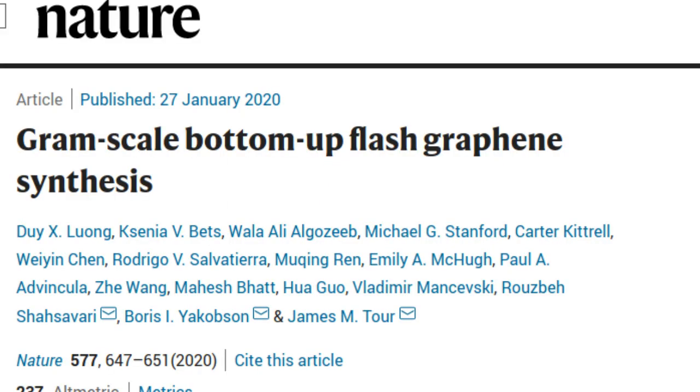As reported in the journal Nature, flash graphene is made in 10 milliseconds by heating carbon-containing materials to 3,000 Kelvin.